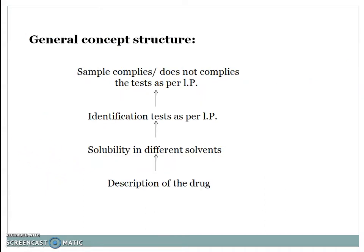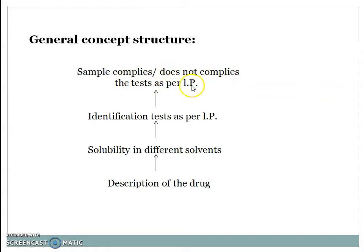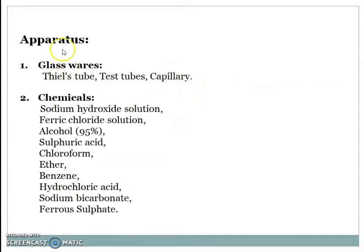The general concept structure involved in identification testing: first, perform the description of the drug; then check solubility in different solvents; then perform identification tests as per IP. If the compound shows all tests positive, the sample complies. If tests are negative, it does not comply as per IP. Apparatus required: glassware, test tubes, capillary tubes.